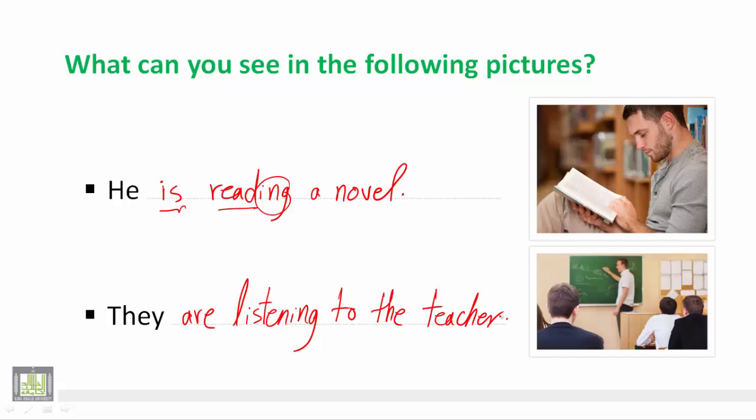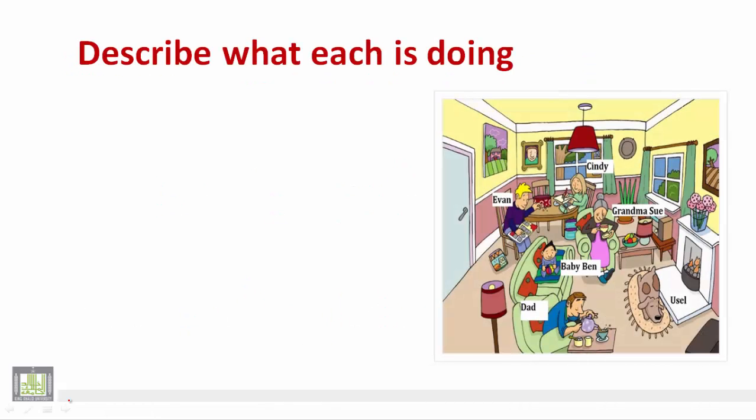Now let's try to describe what each is doing in this sentence. As you can see, we have a family and this family has some members. They are sitting in the living room and each one of them is doing something different.